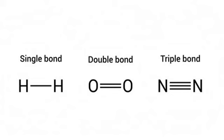A single covalent bond involves one pair of shared electrons, like in hydrogen. A double bond means two pairs of shared electrons, such as in oxygen.